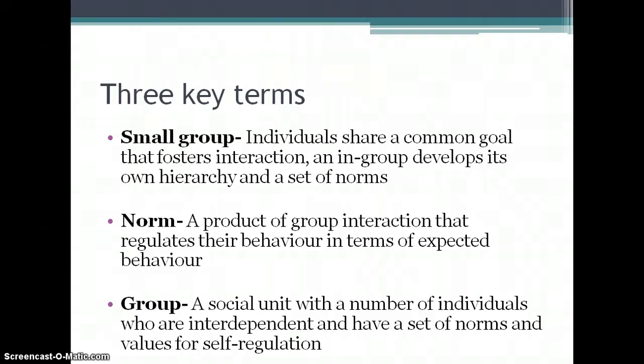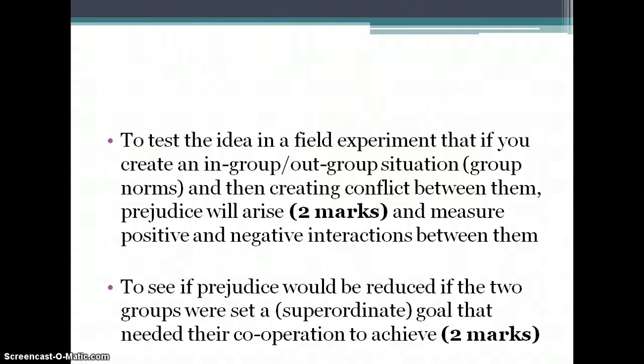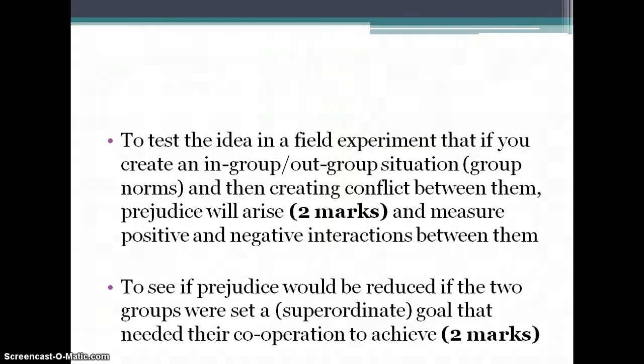These are the two aims of Sheriff, taken directly from the mark scheme of an exam paper, each worth two marks. He wanted to test, in a field experiment, that if you create an in-group/out-group situation and then create conflict between them, prejudice will arise. He also wanted to see if prejudice would be reduced if the two groups were set a superordinate goal — something they would work together on. If we give two conflicting groups a bigger goal to solve, would they cooperate and would that reduce the prejudice?